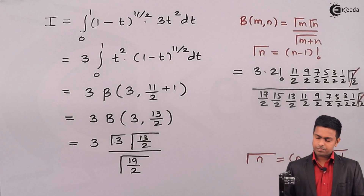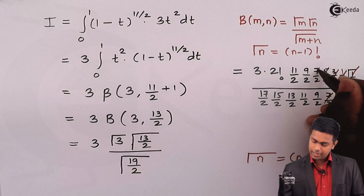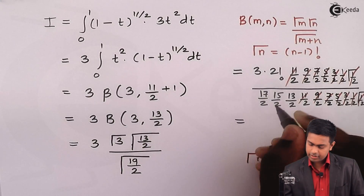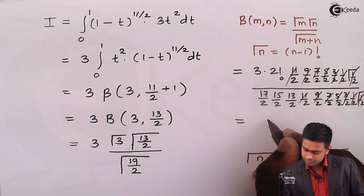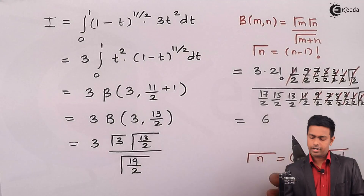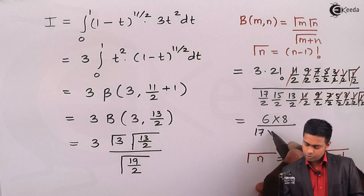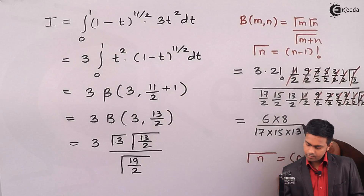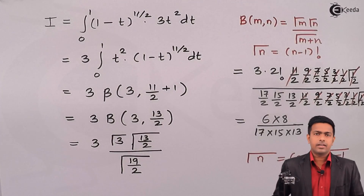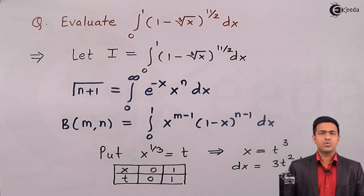We can now cancel Γ(1/2) and the common terms (1/2)·(3/2)·(5/2)·(7/2)·(9/2)·(11/2) from numerator and denominator. In the numerator we get 3 × 2! = 3 × 2 = 6, and in the denominator we are left with (17/2)·(15/2)·(13/2). We just calculate this value and that will be the final result. So we got the value of the integration using the definition of the beta function.